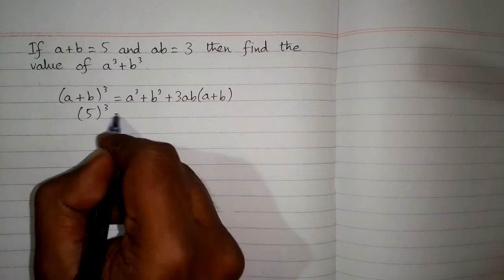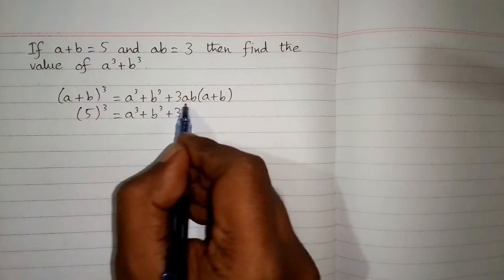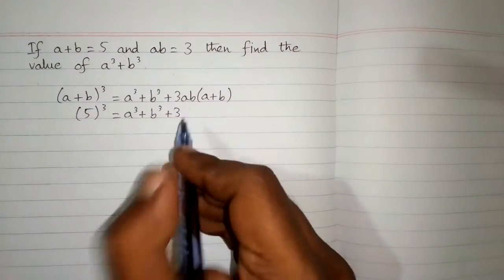So we have 5 cube, then a cube plus b cube plus 3ab, and in place of ab we can put 3.